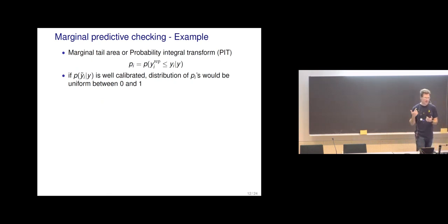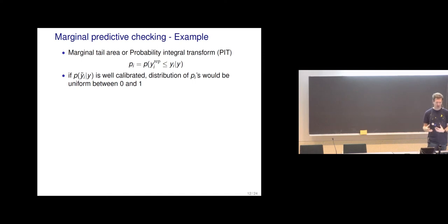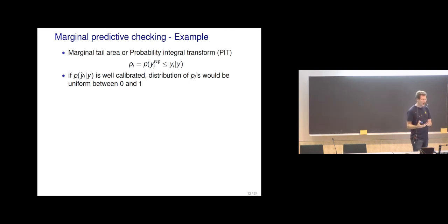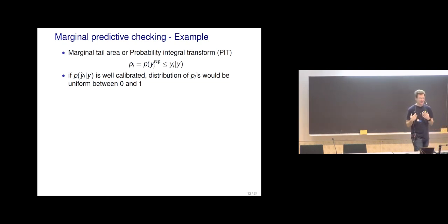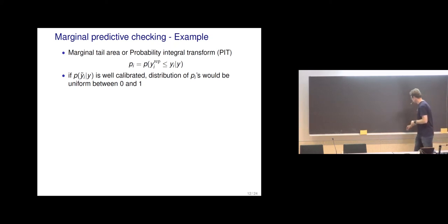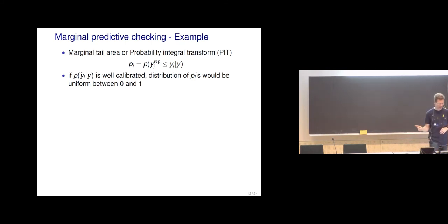There is a distinction: in posterior predictive checking we often simulate a dataset of the same size, while marginal predictive checking looks at one observation at a time. For the light speed example this doesn't matter much since there are no covariates x, but in other cases this distinction matters. This also connects to the probability integral transform, which I'll come back to when discussing cross-validation figures.